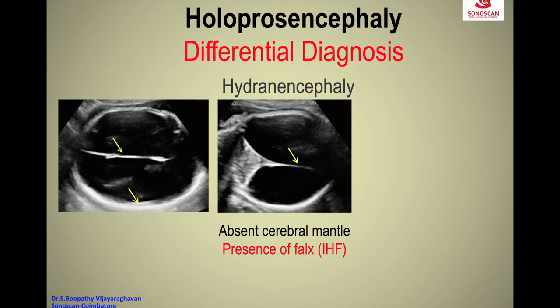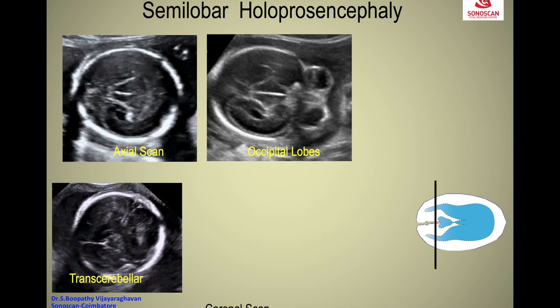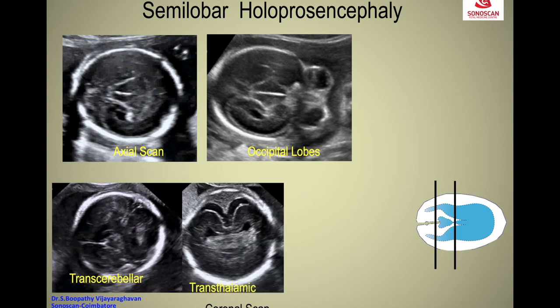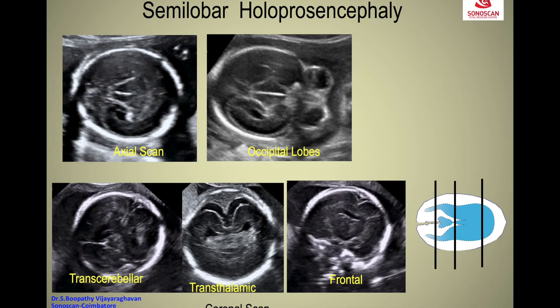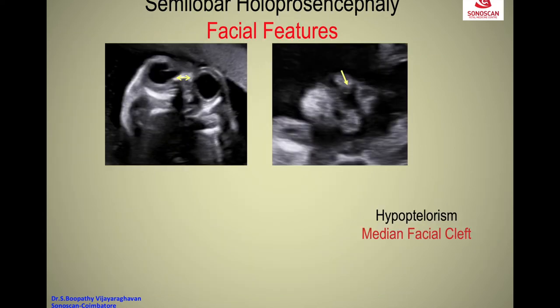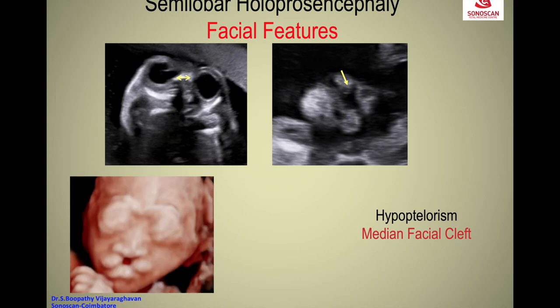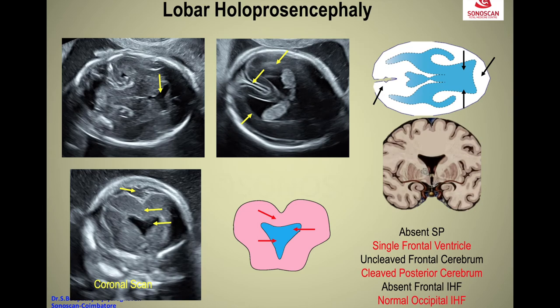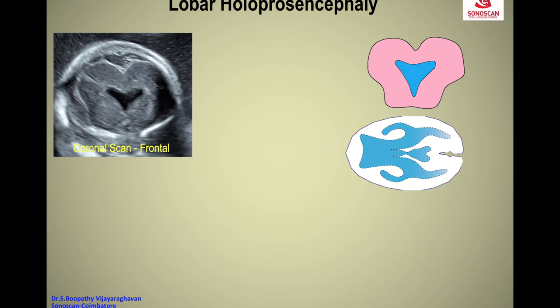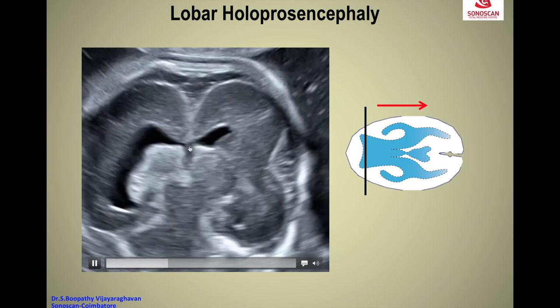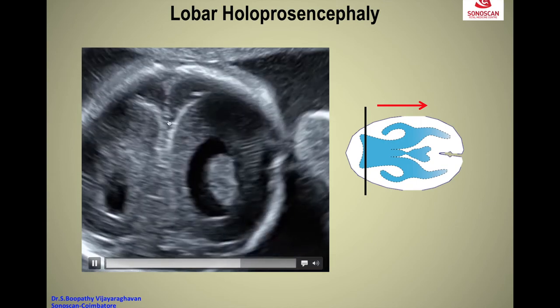It can mimic absent nose, anophthalmia, and a normal midline interhemispheric fissure with a normal face differentiates it. Through the transthalamic and transfrontal planes, the features are: absent cavum septum pellucidum, median cleft upper lip with a collapsed flat nose, and a well-cleaved posterior occipital cerebrum with a single frontal ventricle.